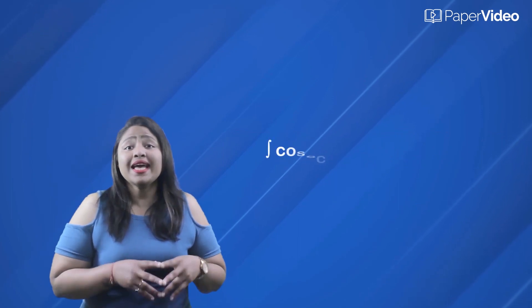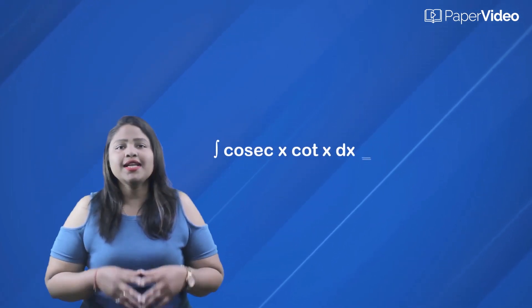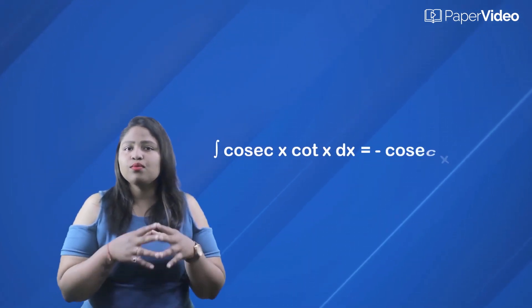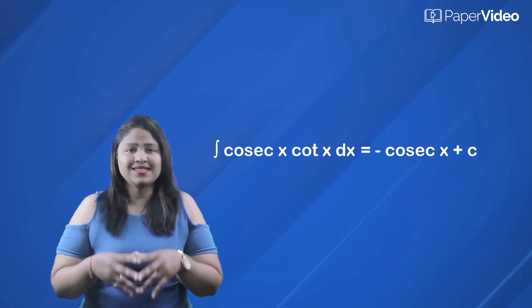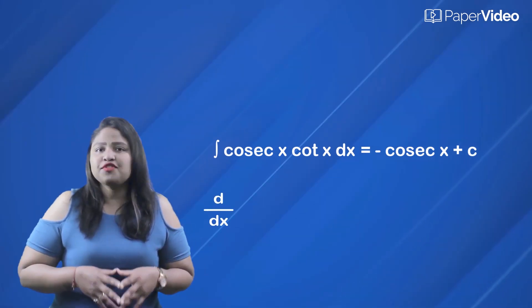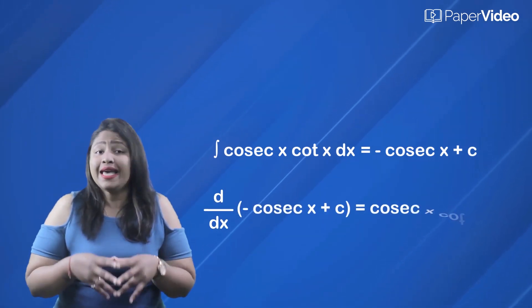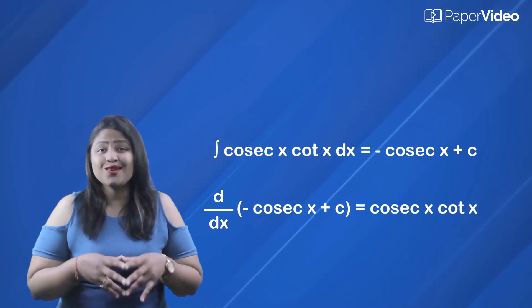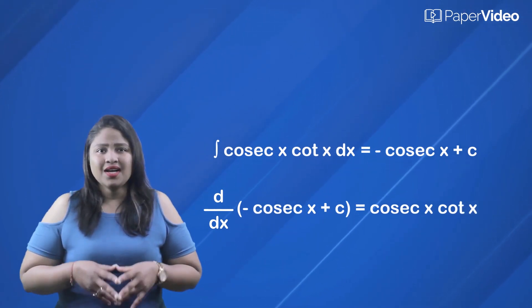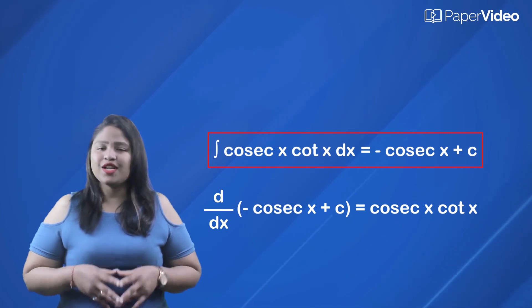Next, we have the integral of cosec x cot x dx. This integral is equal to minus cosec x plus c. And we know that if we differentiate minus cosec x plus c, we get cosec x cot x. Therefore, this standard formula is verified.